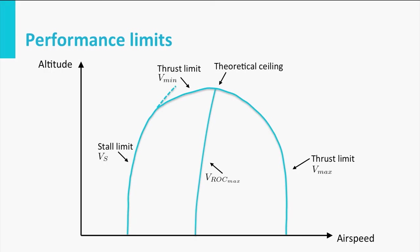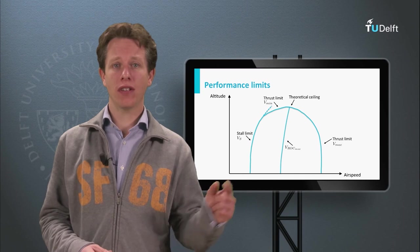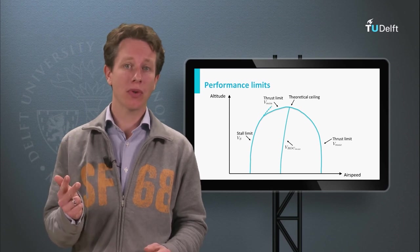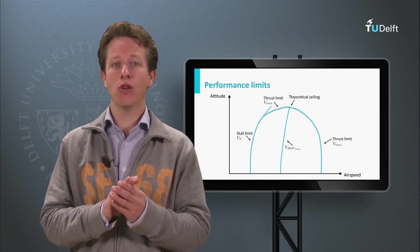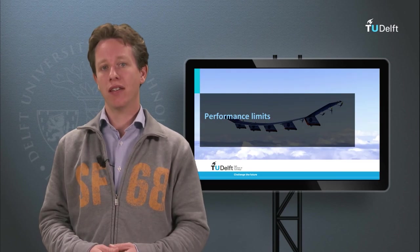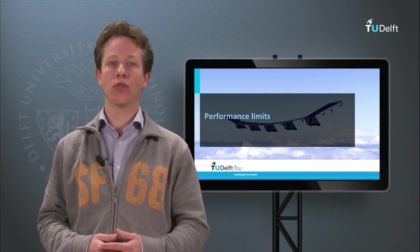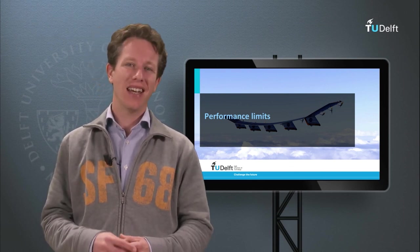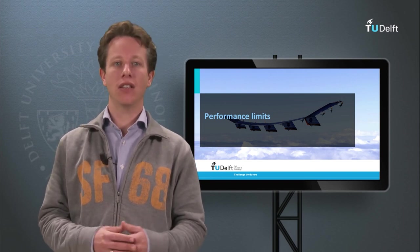This diagram shows us all combinations of airspeed and altitude at which an aircraft can fly. A large part of this diagram is limited by the available thrust, but part of it is also limited by the aerodynamics. Perhaps interesting to note that at the theoretical ceiling, the conditions for minimum airspeed, maximum airspeed, and maximum rate of climb have all converged into one single point. Now this diagram shows us what the aircraft is able to do. However, that does not mean that the aircraft is also allowed to fly at all those conditions. There are some other operational limits which we also need to take into account, and that is the next topic of the next item in this lecture series.